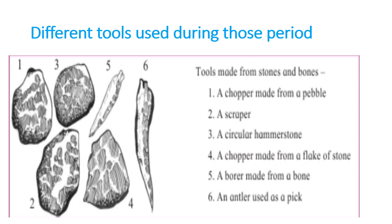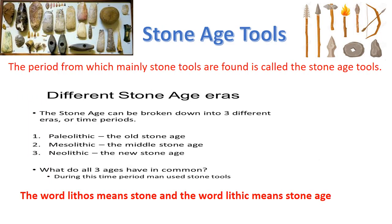These are the different tools used during those periods. In the first picture you see a chopper made from a pebble — a stone — used for chopping, like cutting flesh and vegetables. The second is a scraper, used to scrape the skin of animals. The third is a circular hammer, used to hit or break hard objects. The fourth is a chopper made from a flake of stone, also for chopping. The fifth is a borer made from bone, used to dig holes. The sixth is an antler used as a pick — an antler is the pair of horns that grows on the head of some animals — used for picking objects from the ground.